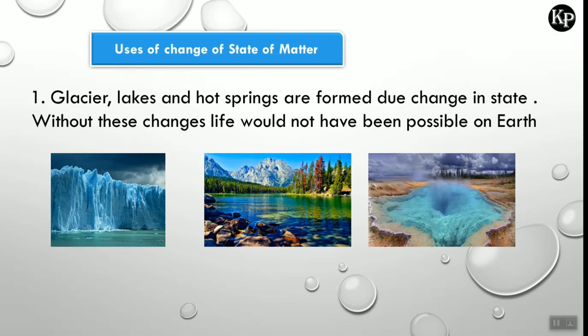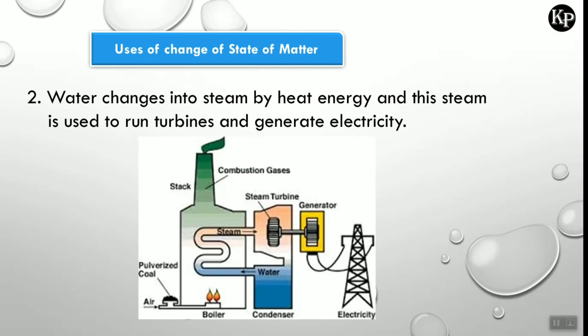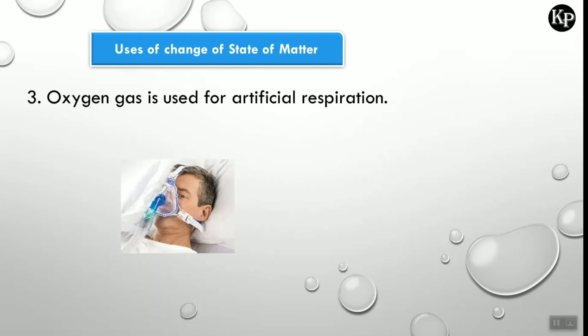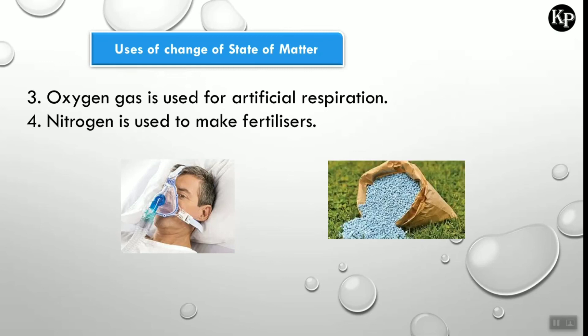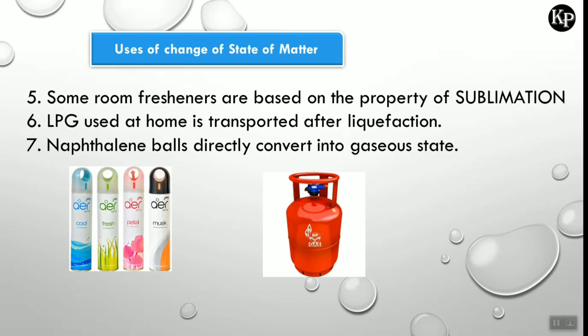Uses of change of state of matter: glacier lakes and hot springs are formed due to change in states — without these changes, life would not be possible on Earth. Water changes to steam by heat energy, and this steam is used to run turbines and generate electricity. Oxygen gas is used for artificial respiration, nitrogen is used to make fertilizers, some room fresheners use the property of sublimation, and LPG (liquid petroleum gas) used at home is transported after liquefaction.